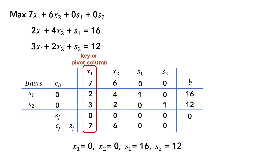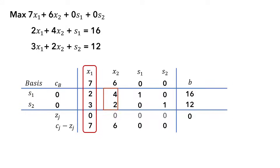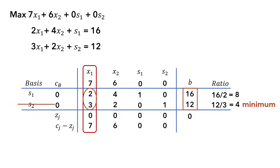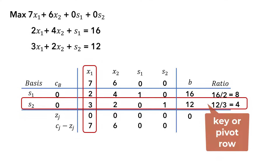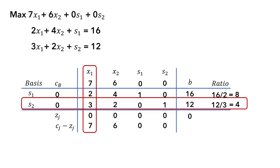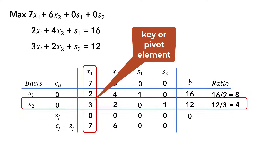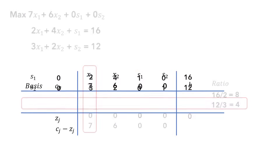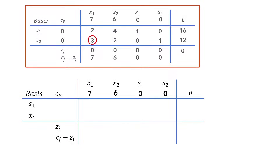But which current basic variable will x1 replace — s1 or s2? To determine that, we calculate ratios of the B column values relative to their corresponding pivot column values and choose the row with the minimum value. For the first row, the ratio is 16 over 2, which gives 8. For the second row, the ratio is 12 over 3, which gives 4. The minimum of these two is 4. Therefore, s2 will be leaving the basis to be replaced by x1. This row with the minimum value is called the key row or pivot row, and the value at the intersection of the pivot row and pivot column is referred to as the key element or pivot element. In the initial simplex tableau, 3 here is the pivot element.